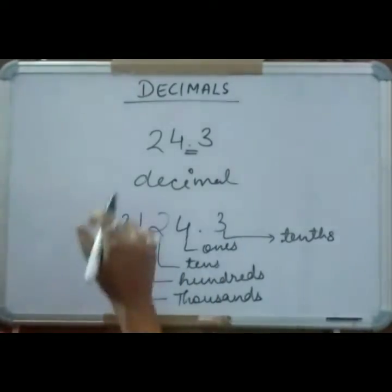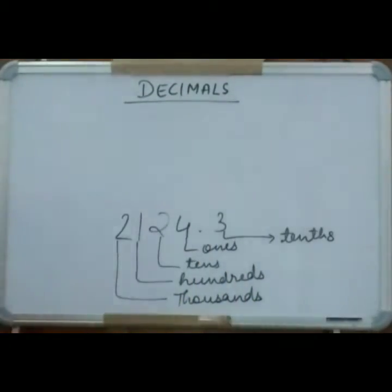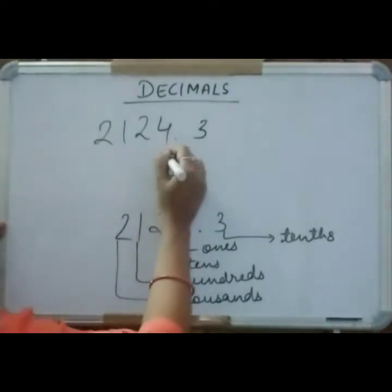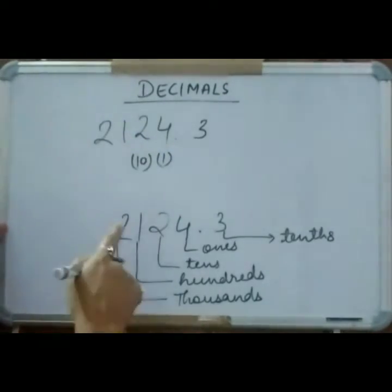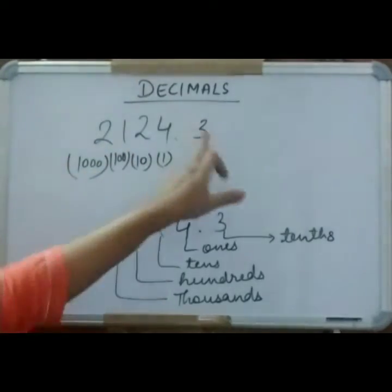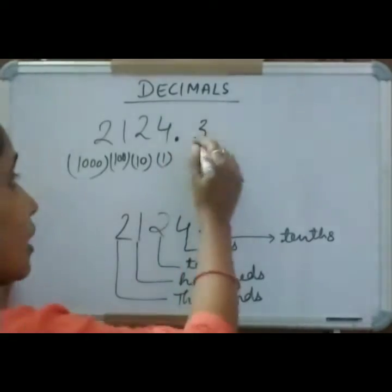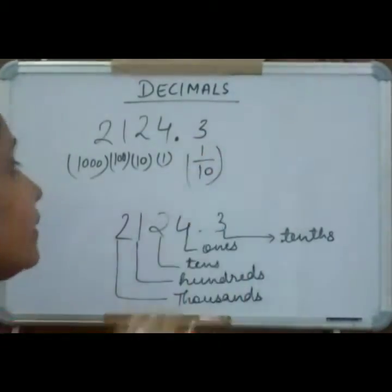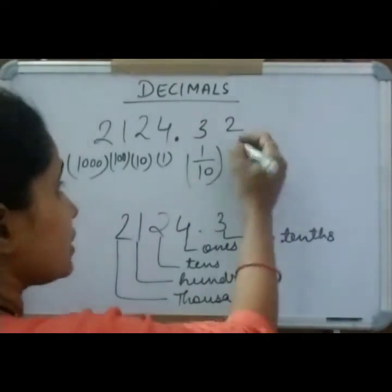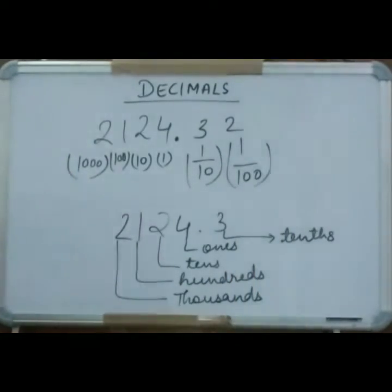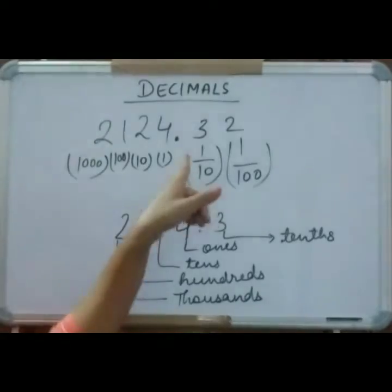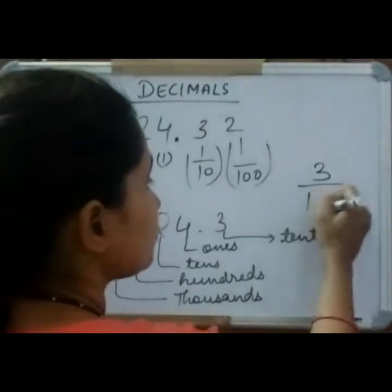So how do we write the place value after the decimal? See this number. Ones, tens, hundreds — ones shows the value one, tens shows the value ten, hundreds shows one hundred, and thousands shows one thousand. But this digit after the decimal point will have a place value of one upon ten. And if there is a next number after the decimal, it will be one upon hundred. So this digit 3 will be at the tenths place — its value is three upon ten.